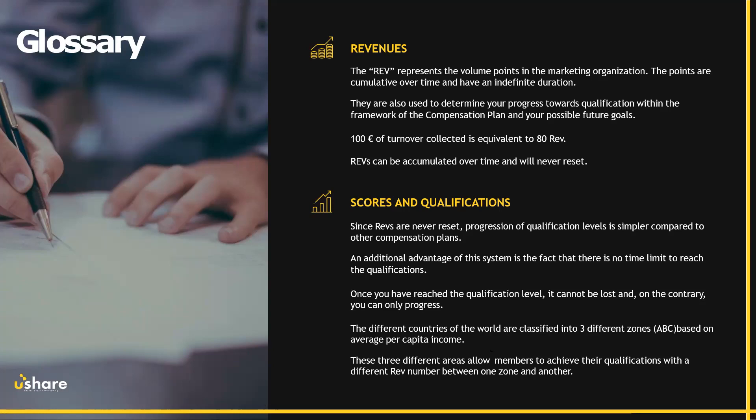Each time you spend money — in our case, buy a U-Card — 80% of the amount spent is equivalent to your point volume, and that is the amount used to calculate your ranking. It is also used to determine your progress towards your qualification within the organization. For example, for 100 euros of turnover or sales, the equivalent REV or point volume is 80, because it's 80%. REVs are calculated over time and will never be reset. You never lose them, you never go down — you can only go up.